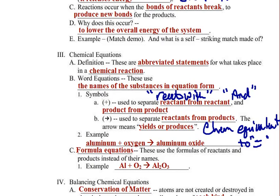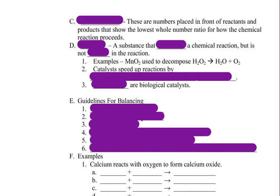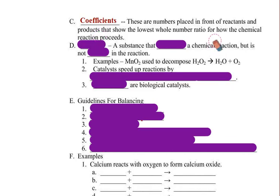To start balancing chemical equations, we need to write our skeleton equation or our formula equation — these two things are pretty much the same thing. Skeleton equations are formula equations that don't show the ratios of reactants to products. However, once we start throwing coefficients in, those are what show the whole number ratios for how our chemical reactions proceed, for our products and reactants.